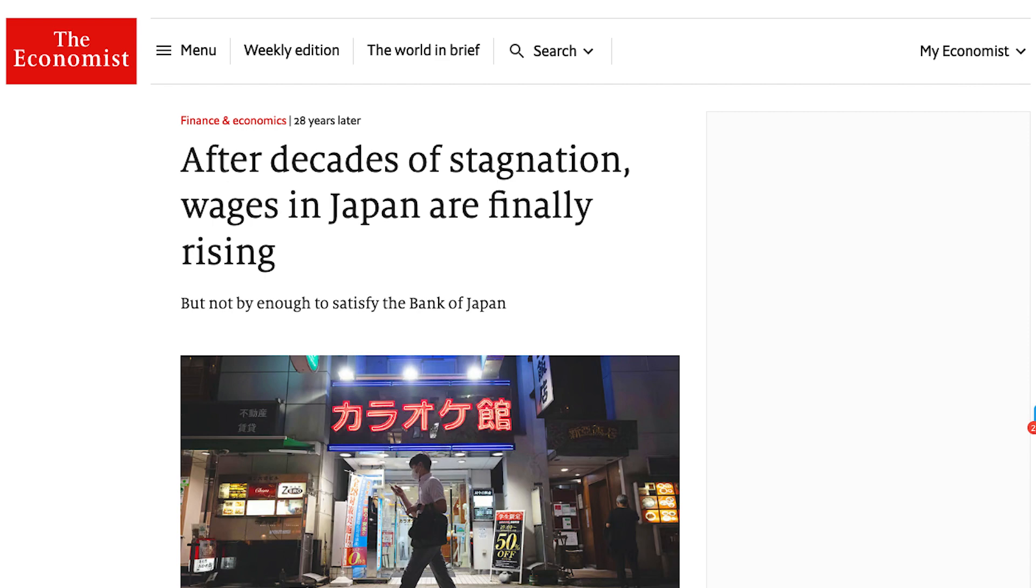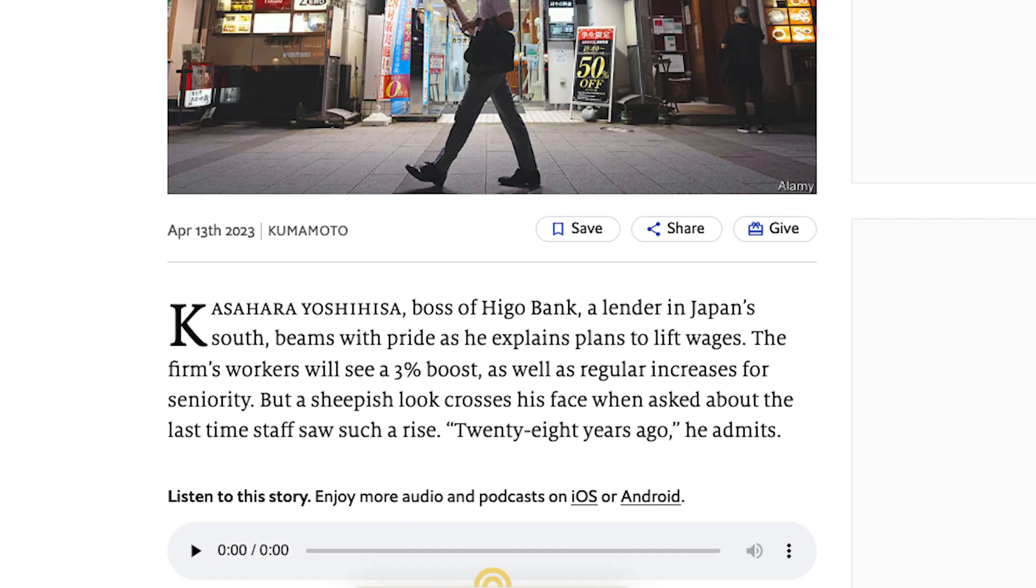After decades of stagnation, wages in Japan are finally rising, but not by enough to satisfy the Bank of Japan. Kasahara Yoshihisa, boss of Higo Bank, a lender in Japan's south, beams with pride as he explains plans to lift wages. The firm's workers will see a 3% boost, as well as regular increases for seniority. But a sheepish look crosses his face when asked about the last time staff saw such a rise. 28 years ago, he admits.